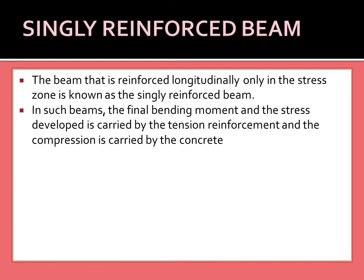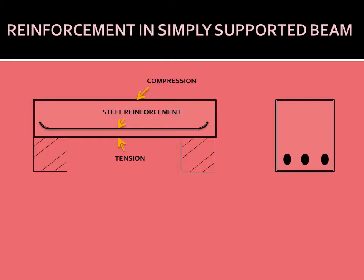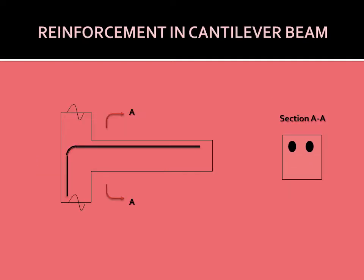The compression is carried by the concrete. In a simply supported beam, reinforcement is only placed in the tension zone — the tension is taken by the tensile reinforcement and the compression part is taken by the concrete. This is also shown for reinforcement in cantilever beams.